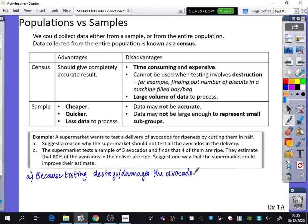The supermarket tests a sample of five avocados and finds that four are ripe. They estimate that 80% of the avocados in the delivery are ripe. Suggest one way the supermarket could improve their estimate. They could increase the sample size. Pretty straightforward—they could increase the sample size because five is a very small sample.